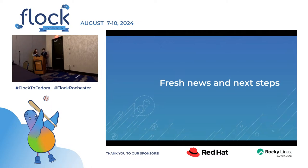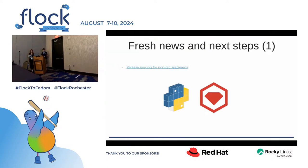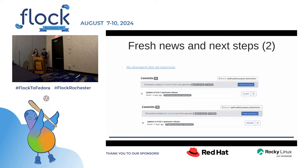Now for fresh news and next steps. Packit is definitely not suitable for all packages. For a long time we had the restriction that Packit could only be used for git-based upstreams, but we are currently working on making it possible for Packit to be used with non-git upstreams — so you could use it for PyPI projects, RubyGem projects, or anything. You can already try this from the CLI, and in the service it should be available in a few weeks. We are also currently working on fixing divergent dist-git branches, where commit hashes differ for different branches.